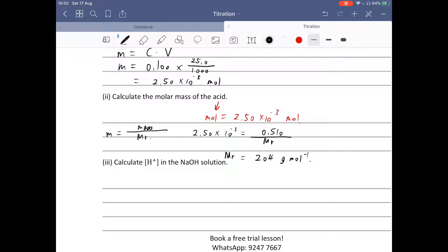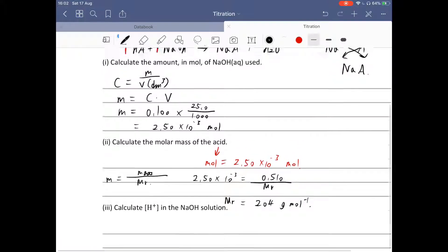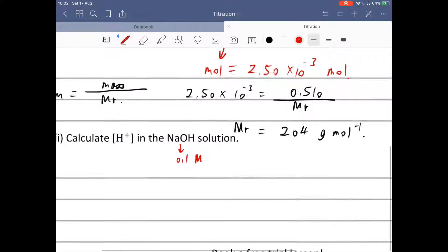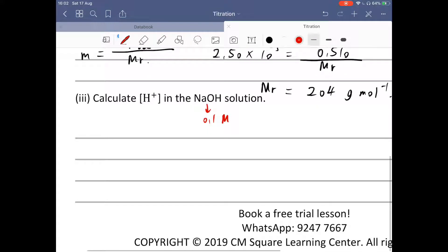Part 3, calculate the hydrogen ion concentration in the sodium hydroxide solution. We know sodium hydroxide is a strong base, which completely ionizes in water. The concentration of sodium hydroxide is 0.1 mole per dm³, which means the hydroxide ion concentration is also 0.1 mole per dm³, or we can write it as 10 to the power negative 1 mole per dm³.